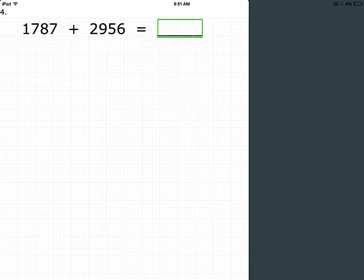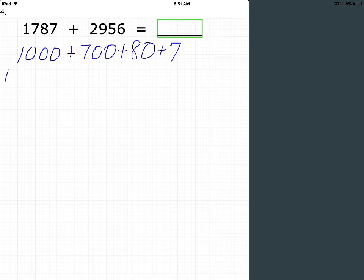So 1787 is expressed as 1000 plus 700 plus 80 plus 7, added to 2956, which is expressed as 2000 plus 900 plus 50 plus 6.